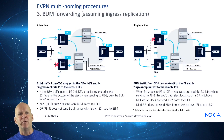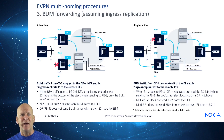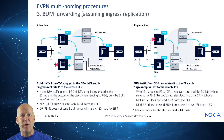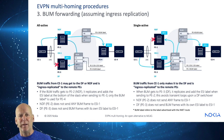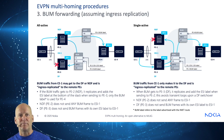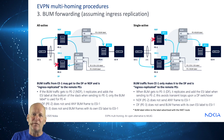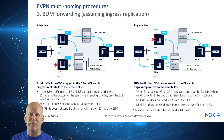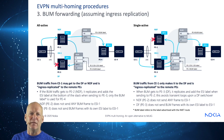For BUM forwarding, assuming ingress replication — which is how this works — BUM traffic from a CE may get to the DF or NDF and is ingress replicated to the remote PEs. The NDF does not send any BUM frames into the ESI. The designated forwarder doesn't send BUM frames with its own ESI label into the ESI, meaning traffic received on the ES from other sources doesn't get replicated again. BUM traffic from CE1 only makes it to the DF and is ingress replicated to the remote PEs.